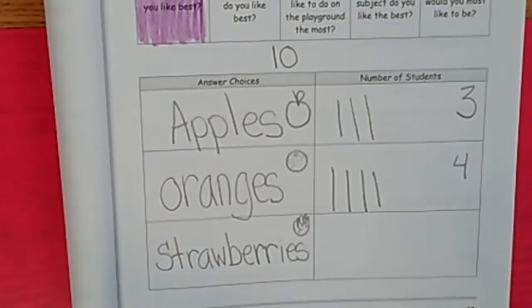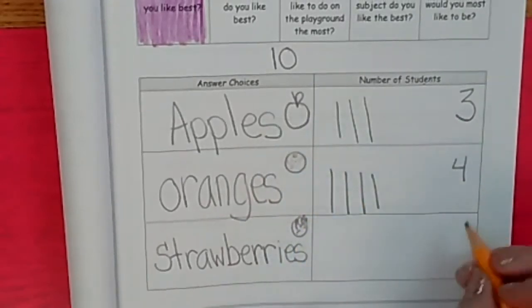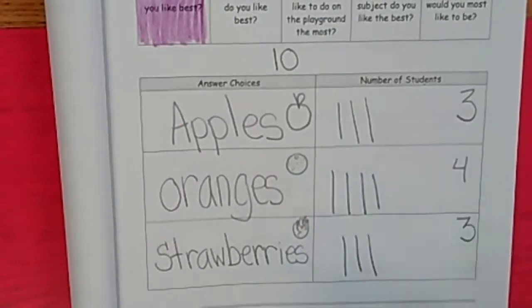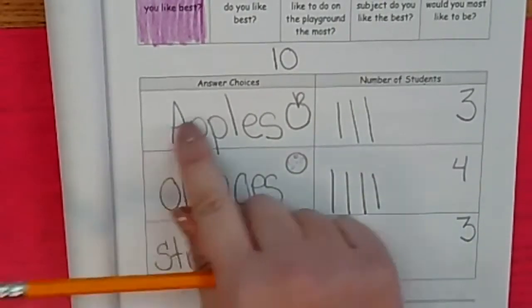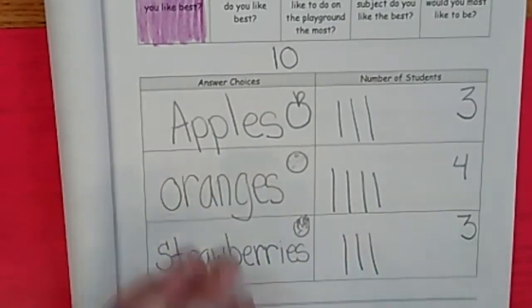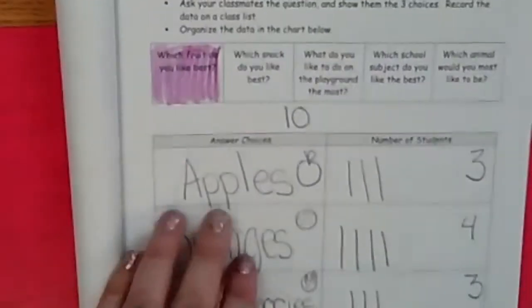Now strawberries ended up having the same as apples. Yeah, that's three. So three and label one, two, three tallies. Three teachers like apples, four teachers like oranges, and three of them like strawberries. Now we're going to do some work about that. So let's turn the page.